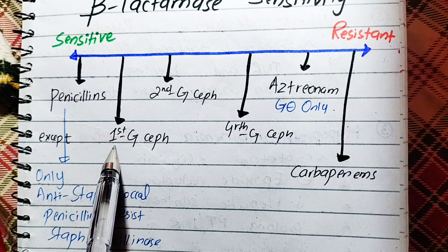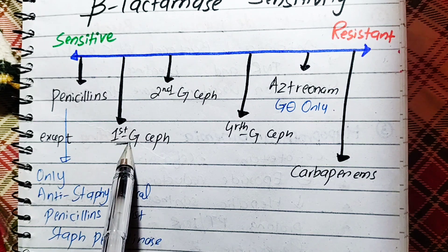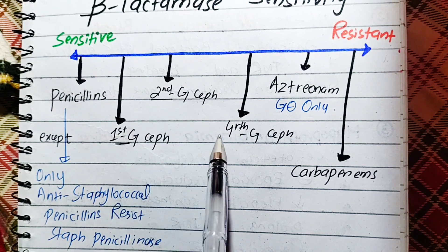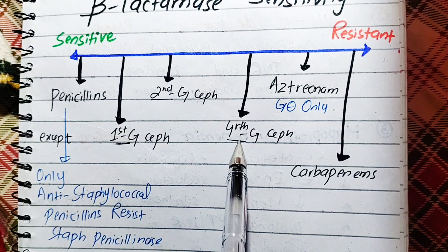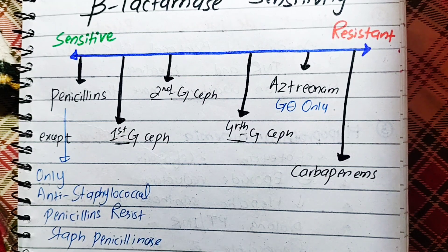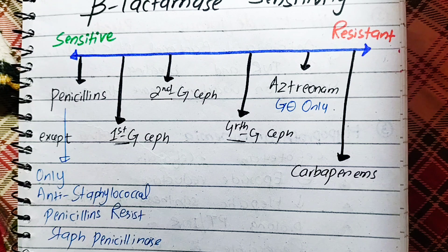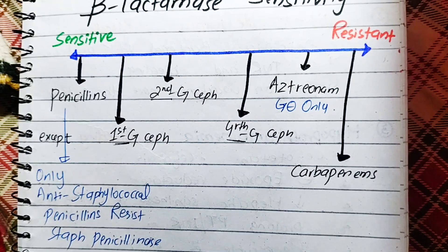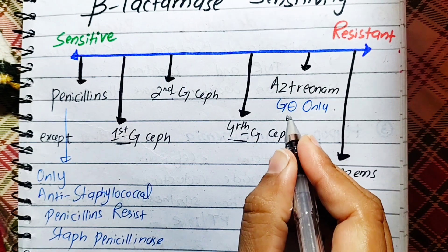The first generation cephalosporins are less resistant compared to second generation, and then fourth generation, and then the next generation cephalosporins are less resistant. We also said that the aztreonam is more resistant than ESBL.